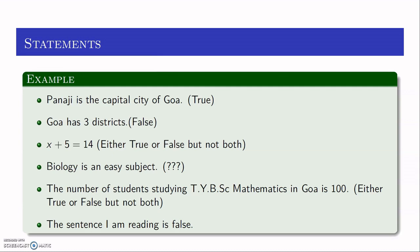The next one — the sentence I am reading is false. If I assume that this sentence is true, then it also means that it is false, so it is both true as well as false at the same time. And if I assume that it is false, then it turns out to be true — so again it is both true as well as false. So we have seen sentences which are true, some which are false, some which are either true or false but not both, and some which are both true as well as false.